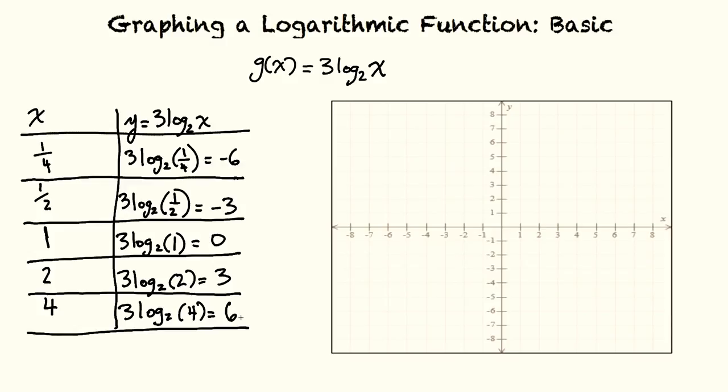We can now plot these points on our graph. As we can see here, I have 1 fourth comma negative 6 right here, 1 half comma negative 3 right here, 1 comma 0 right here, 2 comma 3 right here, and 4 comma 6.